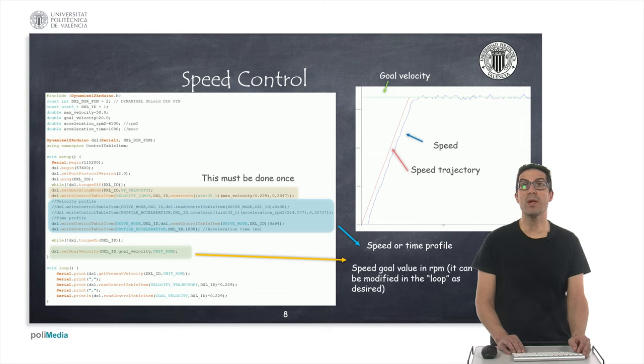In speed control mode we will indicate a goal velocity and this will generate a speed trajectory depending on whether we want to define it as a speed profile with maximum acceleration or a time profile with acceleration time. We can also indicate the maximum speed limit for the motor. Once we have configured these parameters we can indicate the reference speed with the set goal velocity function and in the figure you can see that we have established an acceleration time of about one second for the trajectory generator and here you can see the ramp of the velocity.